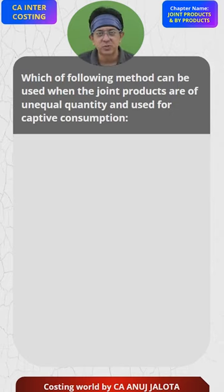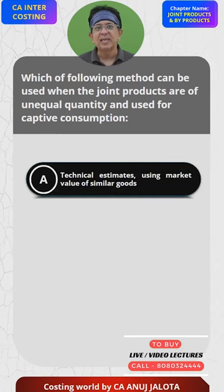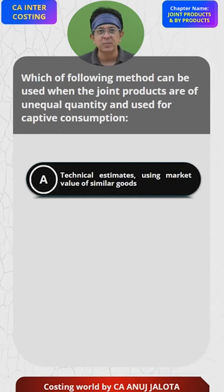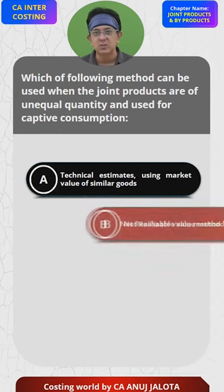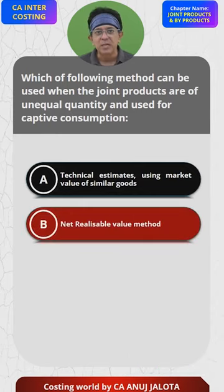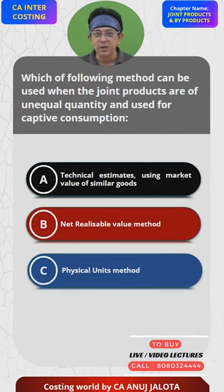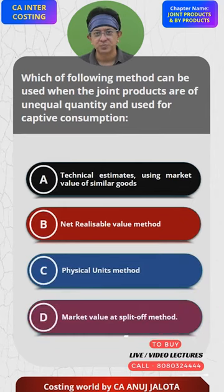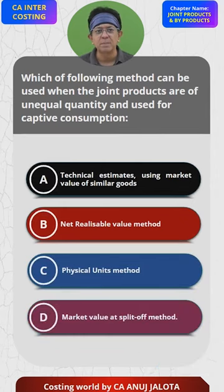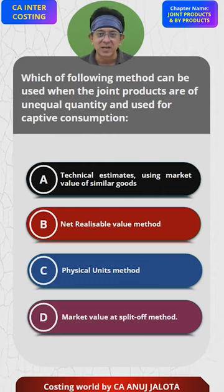So which method can be used? Option A: technical estimates using market value of similar goods. Option B: net realizable value method. Option C: physical unit method. Option D: market value at split-off point. The correct answer should be market value at split-off point...